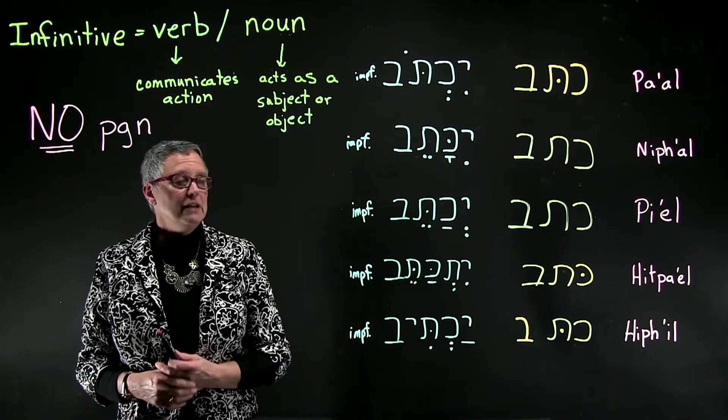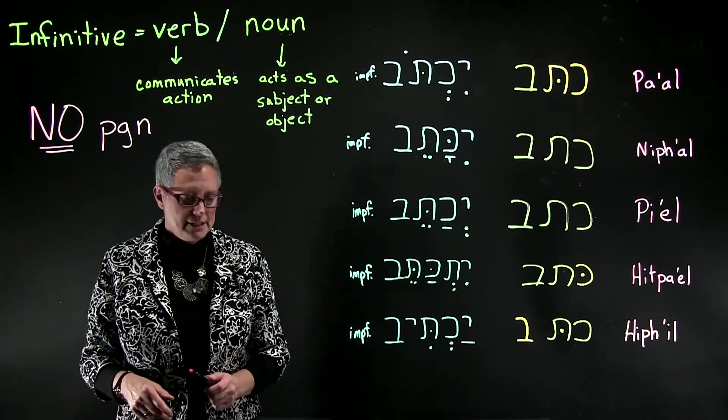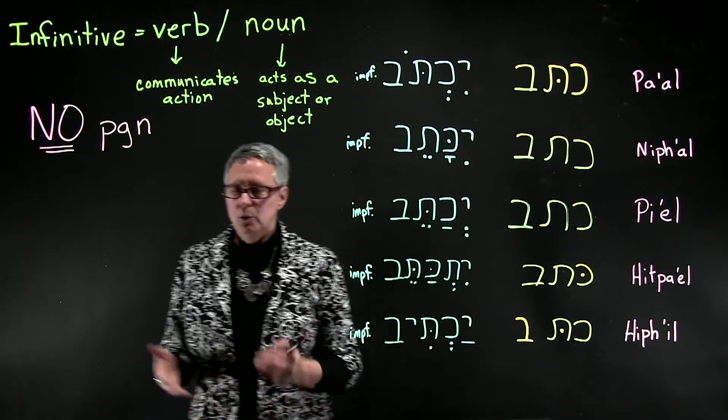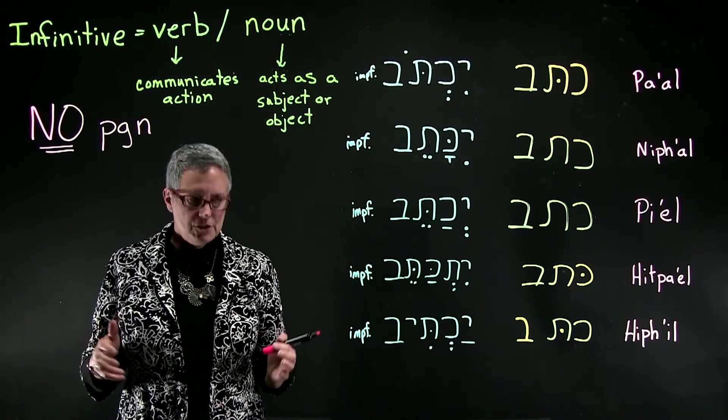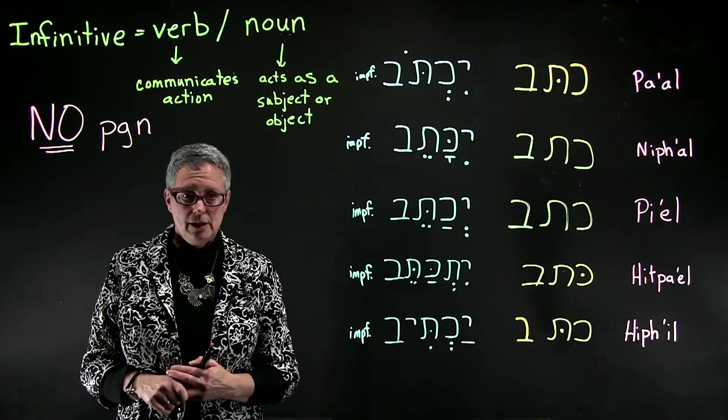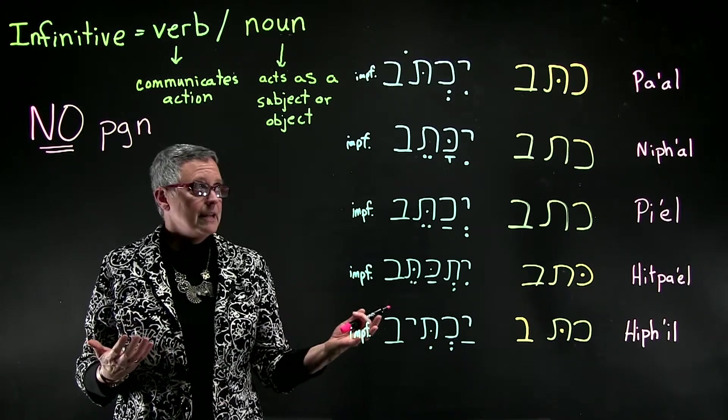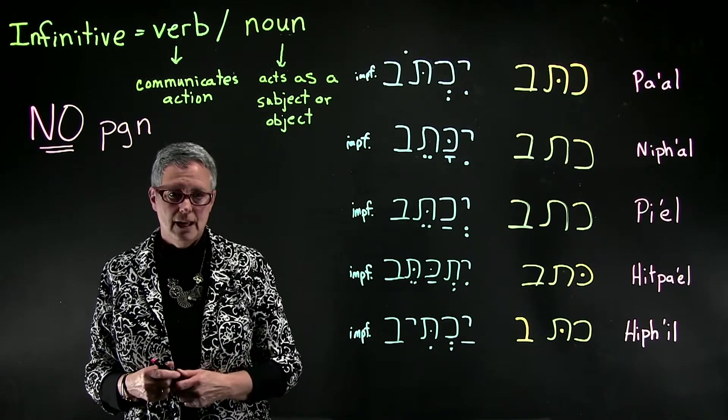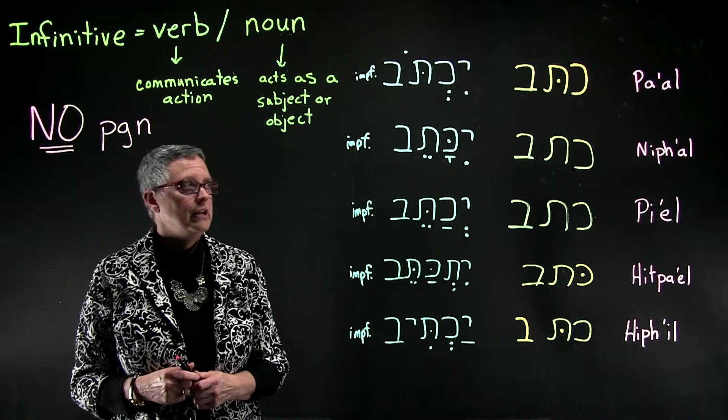Let's see what the infinitives look like in the various stems, starting with the pa'al. Since we're working with infinitive constructs here, we're going to use a preposition, and for this example we're going to use the preposition lamed, although other prepositions can be used as well, and you'll see how that works in the next video.